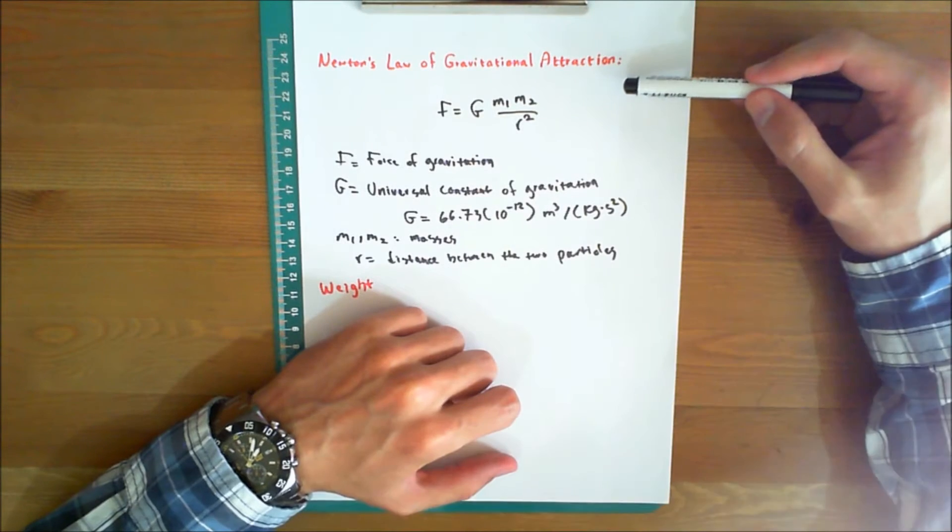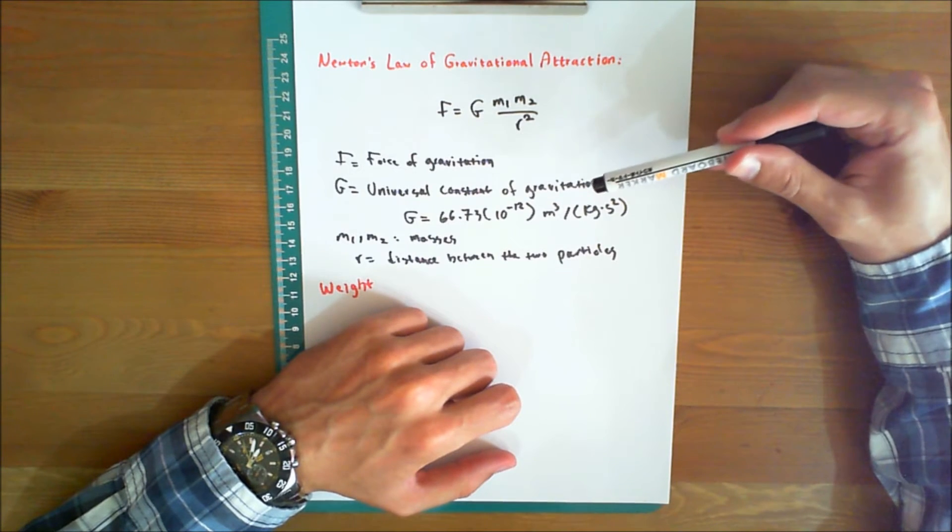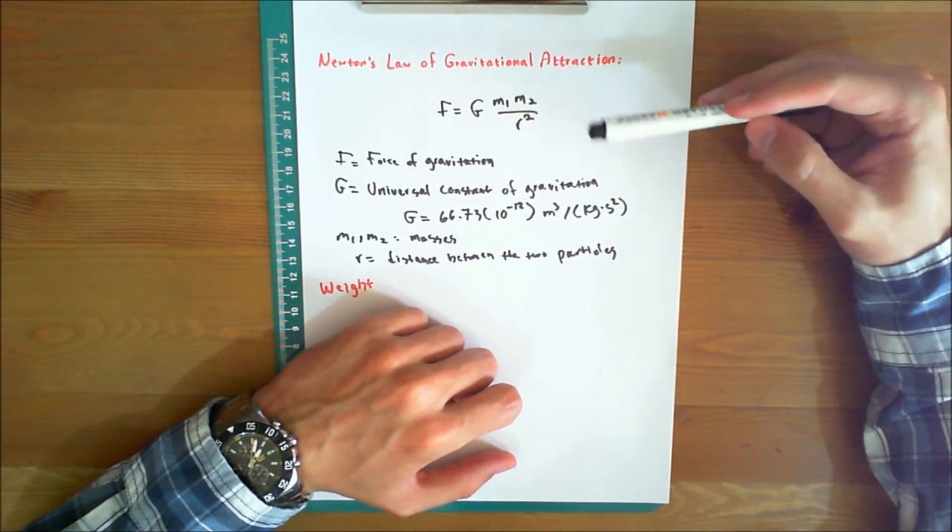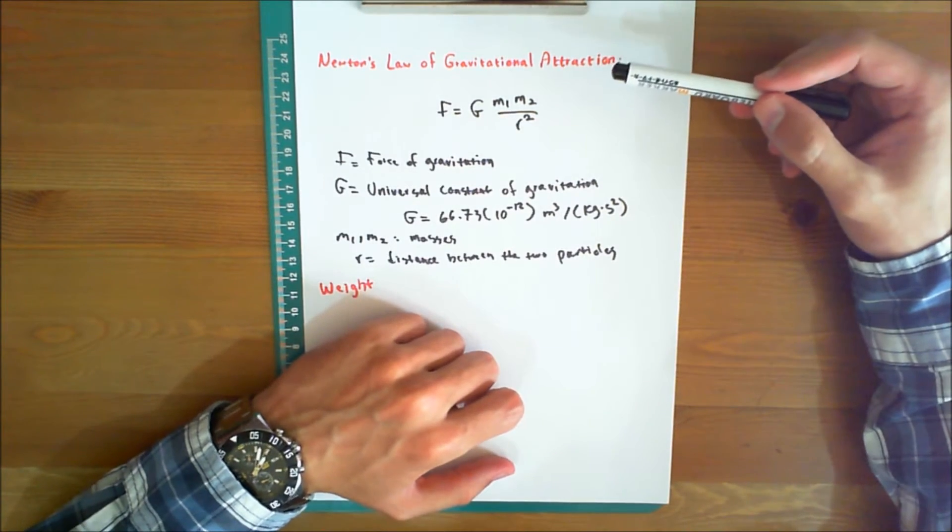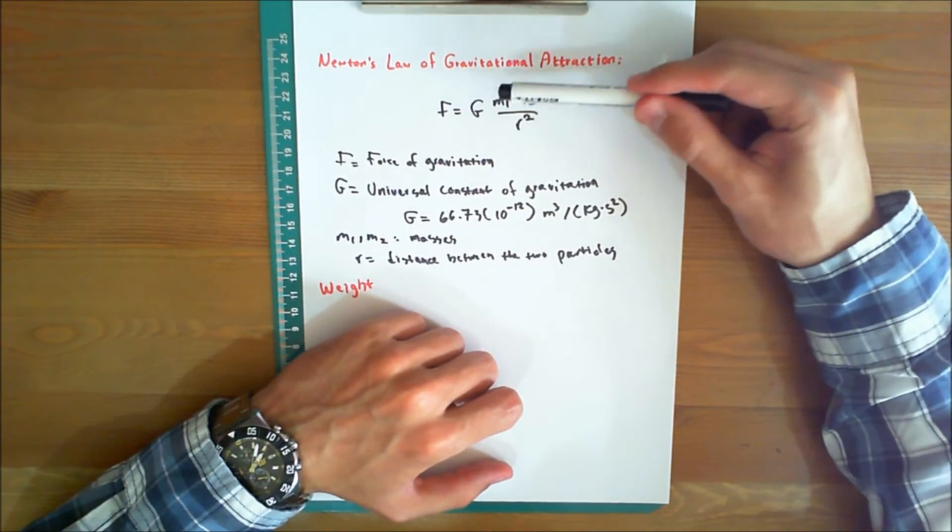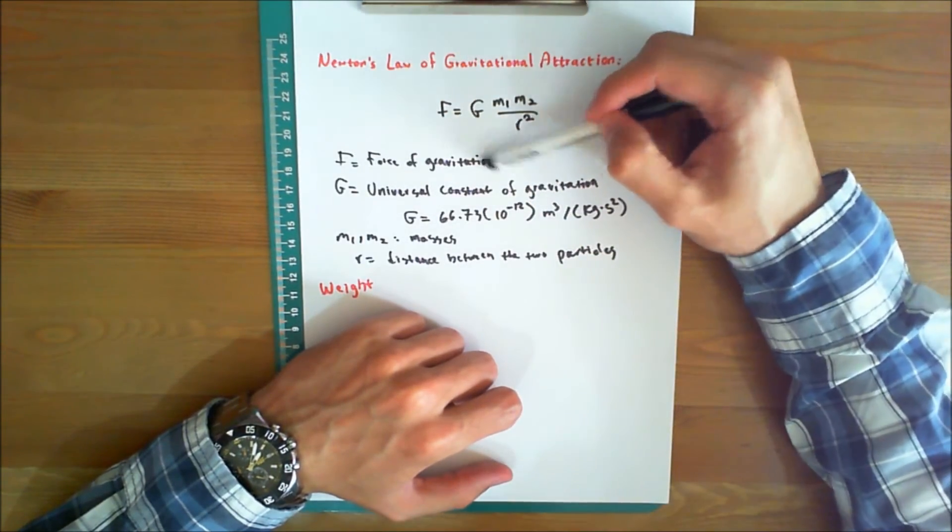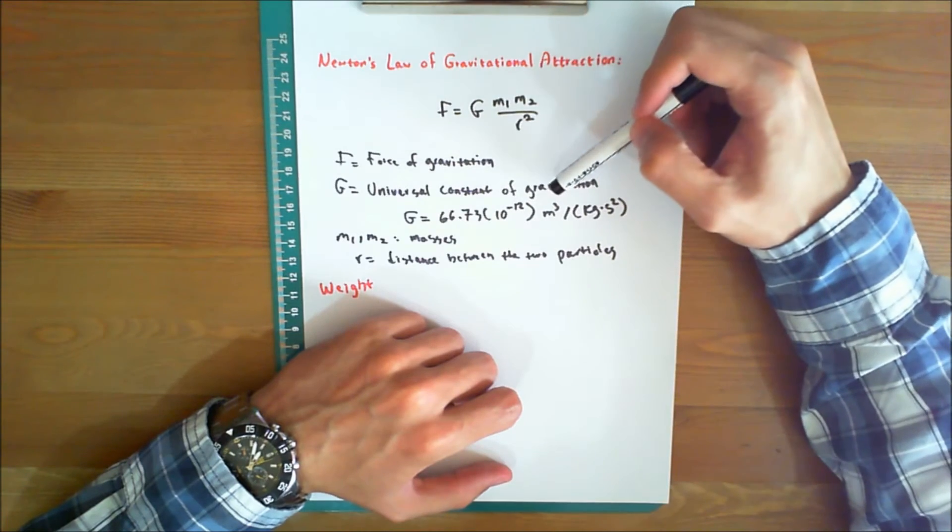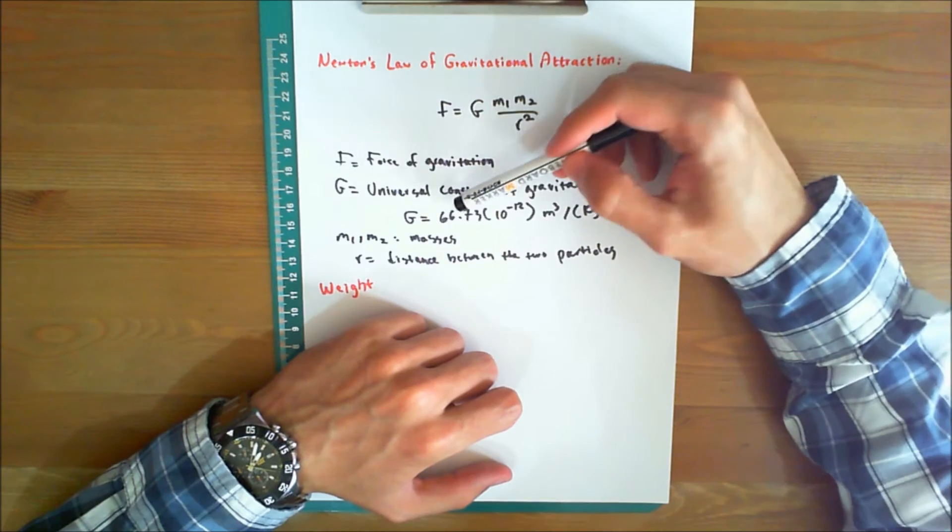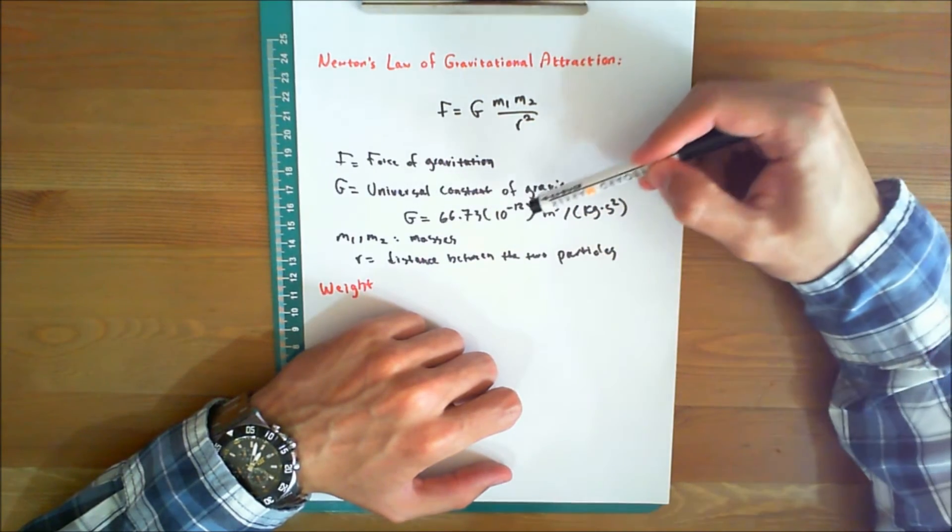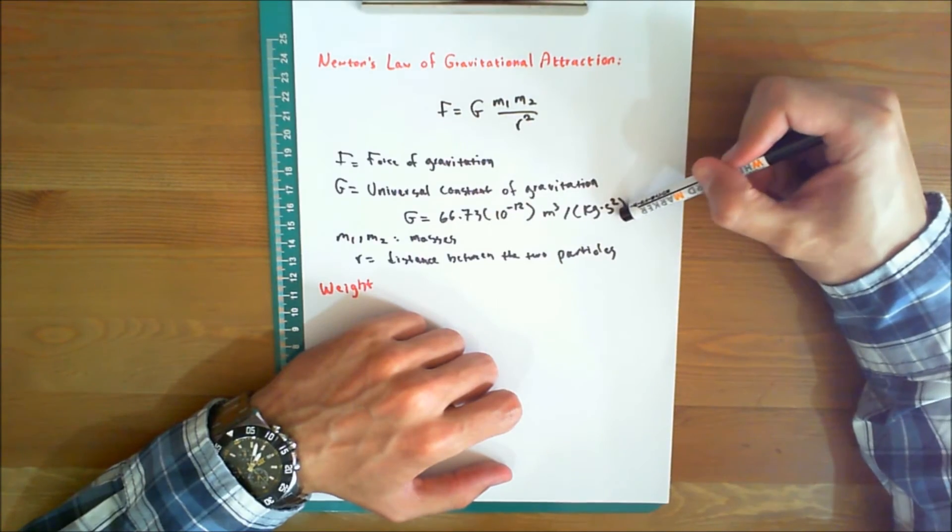Newton's Law of Gravitational Attraction. Shortly after formulating these three laws of motion as discussed in the previous video, Newton postulated a law governing the gravitational attraction between any two particles. Stated mathematically, F equals G m1 m2 over r squared, where F is the force of gravitation, G is the universal constant of gravitation, an empirical physical constant. Based on experimental evidence, G is equal to 66.73 times 10 to the power negative 12 meters cubed over kilograms to a second squared.